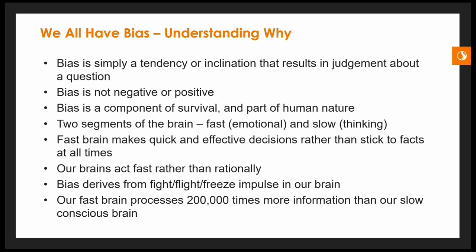Ross says bias is simply a tendency or inclination that results in judgment about a question. It's not negative or positive — he explains bias is really a component of survival and part of human nature. He explains it by separating the brain into two segments: the fast, emotional, unconscious part, and the slow, thinking, conscious part. It's the fight between these two portions of the brain that we encounter every day, and the fast emotional unconscious part usually dominates — that's where bias is derived.